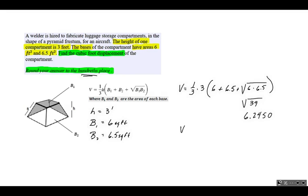Let's bring everything down. Our volume is one-third times 3, which is 1. If we add these three numbers—6 plus 6.5 plus 6.2450—we get 18.7450. So our volume equals 18.7450.